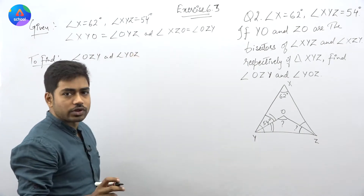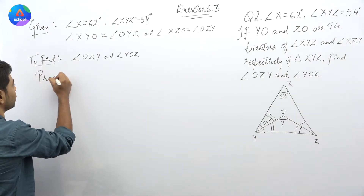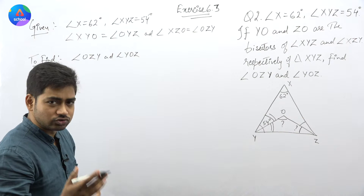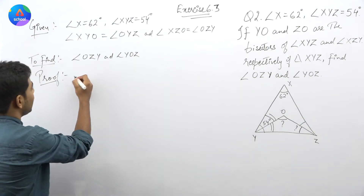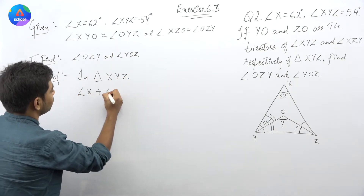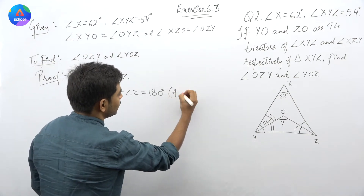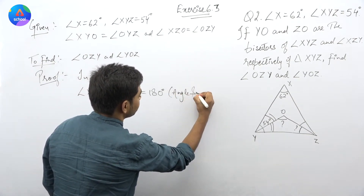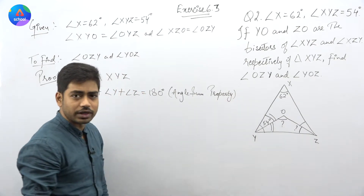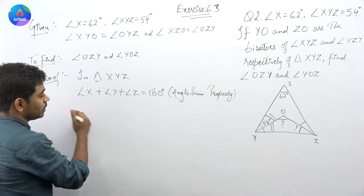Angle OZY और angle YOZ हमें find करना है। Proof पर आ जाते हैं — बहुत आसान सा question है। Angle sum property आप पढ़ चुके हैं, इसका concept भी मैं करवा चुका हूं, videos आपके playlist पे uploaded हैं। तो देखिए, in triangle XYZ, angle X plus angle Y plus angle Z की value 180 degree होगी — angle sum property। ध्यान रखिएगा हर step में उसका reason, property या theorem mention जरूर करना है, वरना question गलत हो जाएगा।